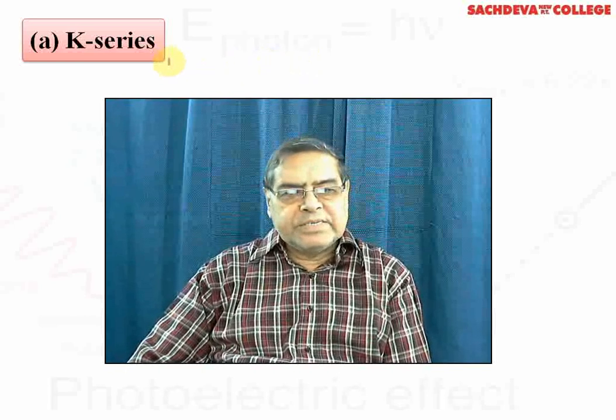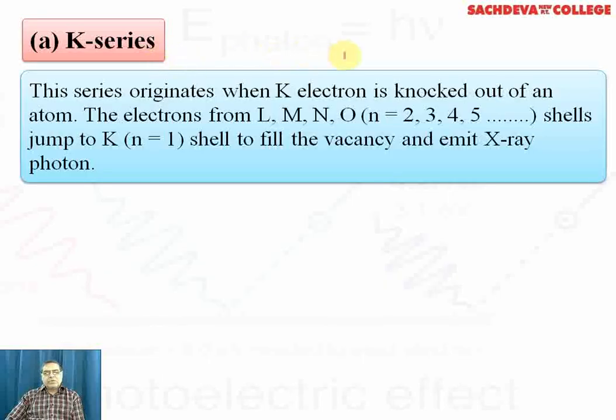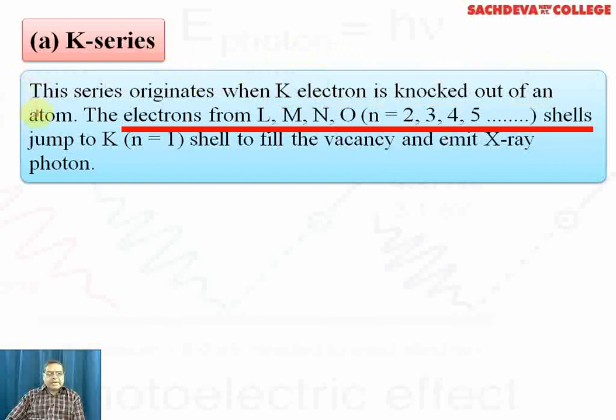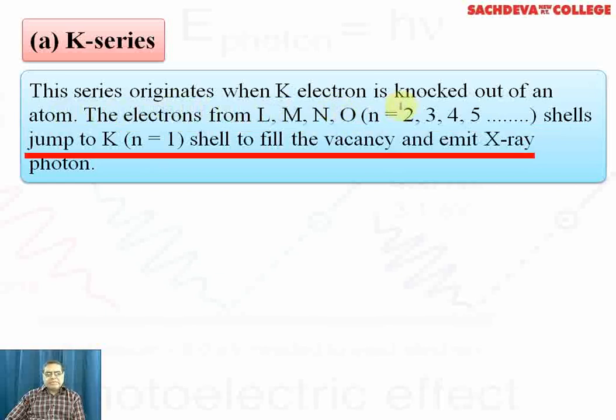Now we come towards the K series. This series originates when K electron is knocked out of the atom. The electrons from L, M, N, O shells, with principal quantum number n = 2, 3, 4, 5, etc., jump to K shell (n=1) to fill the vacancy and emit X-ray photons.